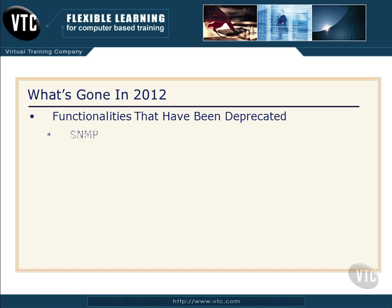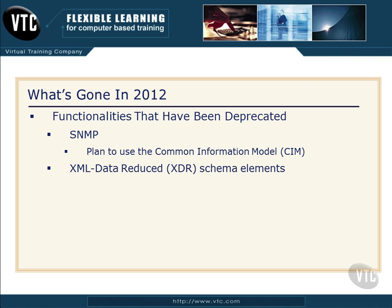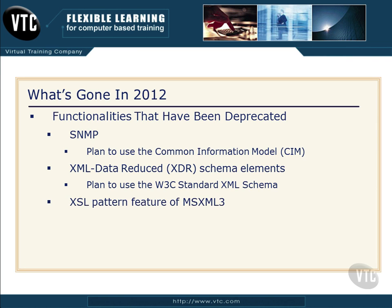Other functionalities that have been deprecated: SNMP, Simple Network Management Protocol — plan to use the Common Information Model, CIM, in the future. Also, XML Data Reduced, or XDR schema elements, are going away, and you'll want to plan to use the W3C standard XML schema. The XSL pattern feature of MSXML3 is also going away — and that's not going to make too many people sad — because now they're suggesting you use the W3C standard XPath, which is very popular in the XML world.